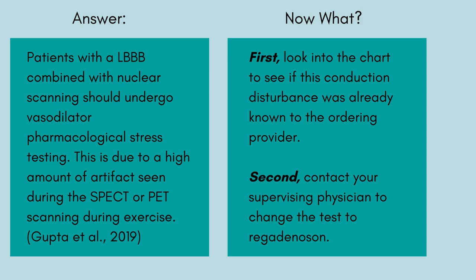Patients with a left bundle branch block combined with nuclear scanning should undergo vasodilator pharmacological stress testing. This is due to a high amount of artifact seen during the SPECT or PET scanning during exercise. A paced rhythm can also interfere with the interpretation of exercise-induced ischemia. Using regadenosin can provide clear imaging without the EKG interference typically seen with these conditions. So, now what do you do?